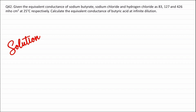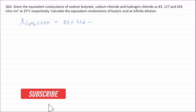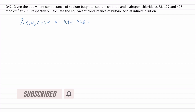Equivalent conductance of butyric acid at infinite dilution, i.e. λ(C₃H₇COOH), will be equal to the equivalent conductance of sodium butyrate (83 per ohm centimetre square) plus the equivalent conductance of hydrogen chloride (426 per ohm centimetre square) minus the equivalent conductance of sodium chloride at infinite dilution (127 per ohm centimetre square).